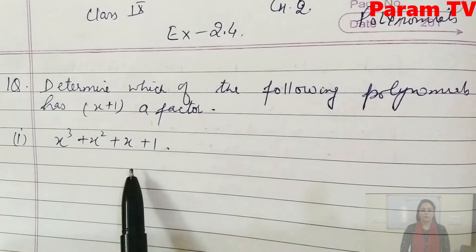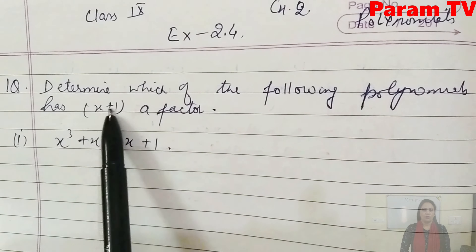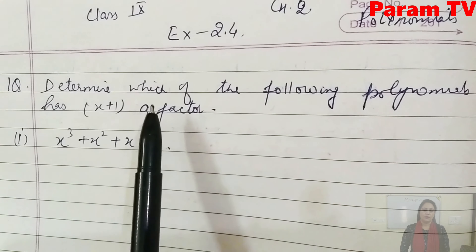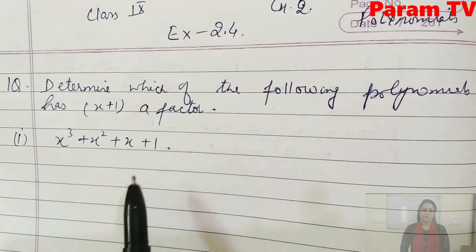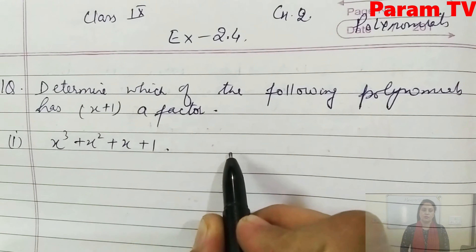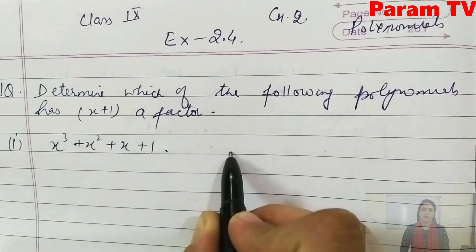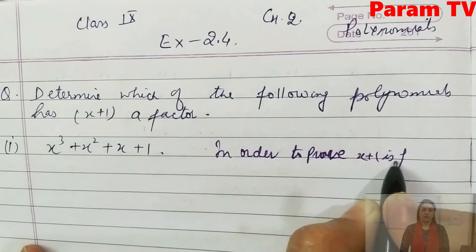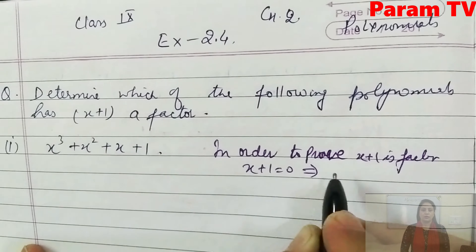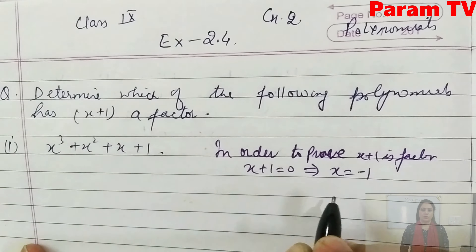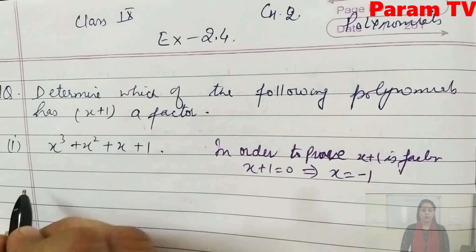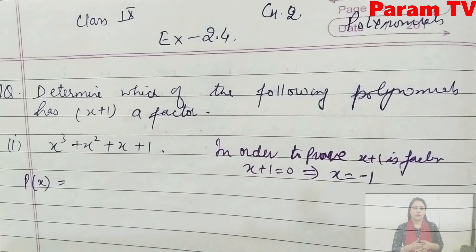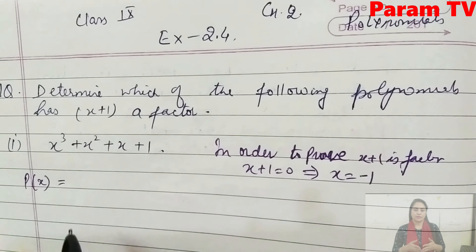For x+1 to be a factor, when we put that value into the polynomial, the remainder should be 0. If remainder is 0, it is a factor; otherwise it is not. So let's check. In order to prove x+1 is a factor, put x+1=0, which gives x = -1. Now put -1 into the polynomial; if the answer is 0, it is a factor, otherwise it is not.